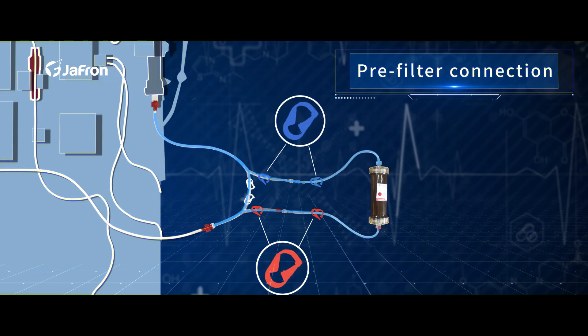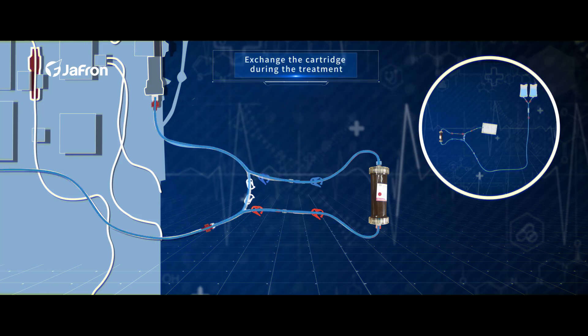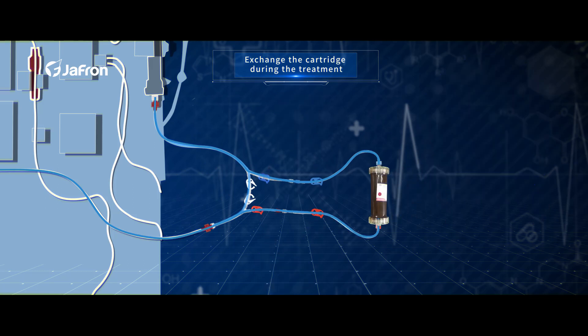To exchange a cartridge during treatment: Use normal saline to return blood from the cartridge. Prime a new cartridge and integrated bloodline set as previously described. Open the white clips, clamp the red and blue clips before and after the cartridge.